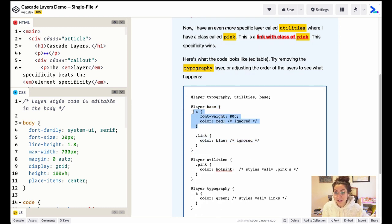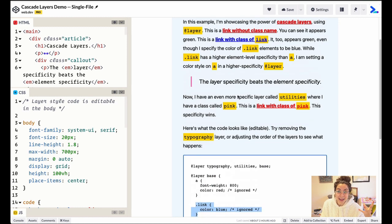And we're setting all of the links, the a tags to color red font weight 800, and then things that have a link class in the same layer have a higher specificity than the a tags in the same layer. So those are appearing blue.